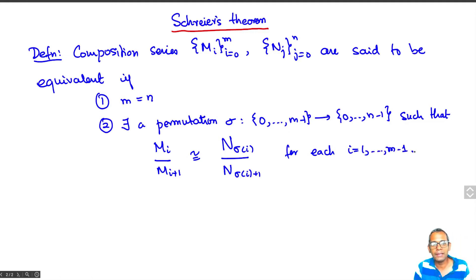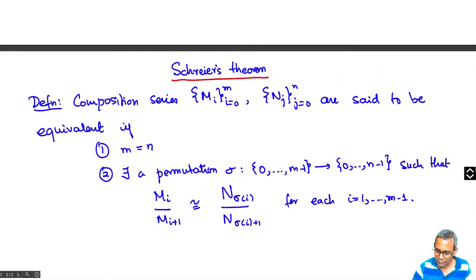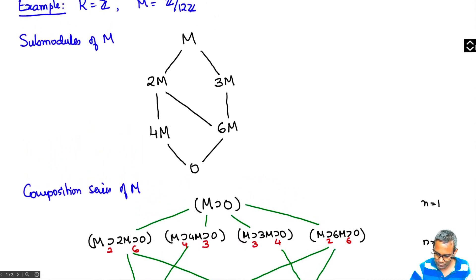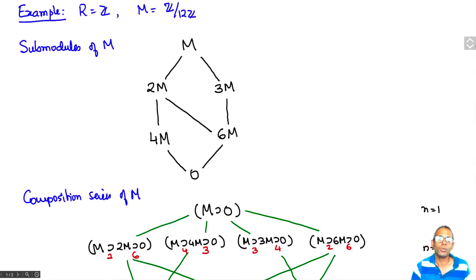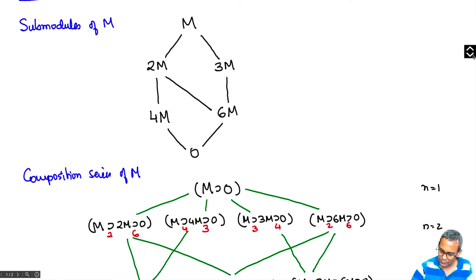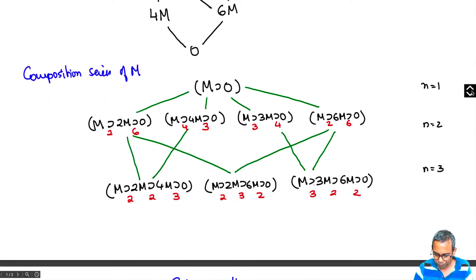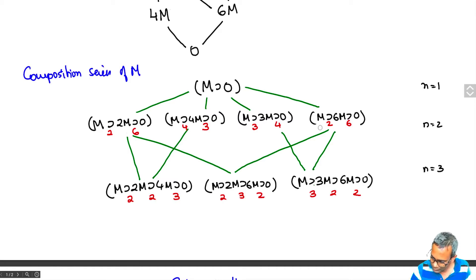So two composition series are equivalent if their quotients are the same. Last time we looked at an example: the ring R equals Z and the R-module M equals Z mod 12Z. We had listed all the submodules and the composition series. In red, the quotients are listed — the integer i means we're looking at Z mod iZ as the quotient. There was a small mistake: the 2 and 6 need to be interchanged.